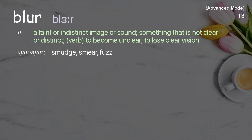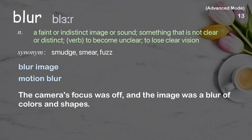Blur: a faint or indistinct image or sound; something that is not clear or distinct. Verb: to become unclear, to lose clear vision. Examples: blur image, motion blur. The camera's focus was off and the image was a blur of colors and shapes.